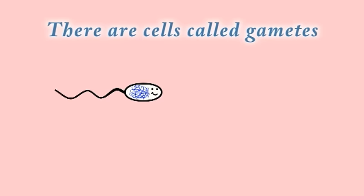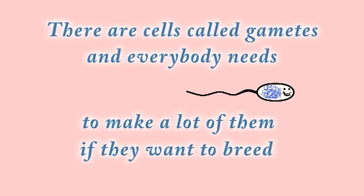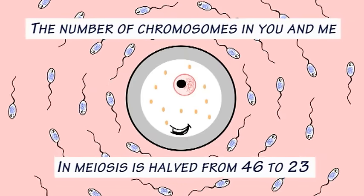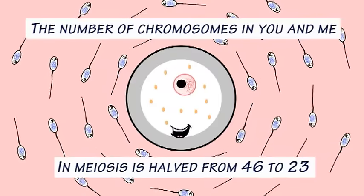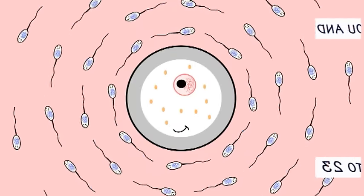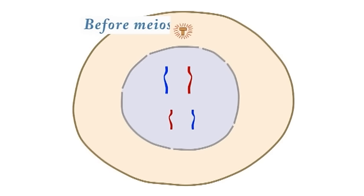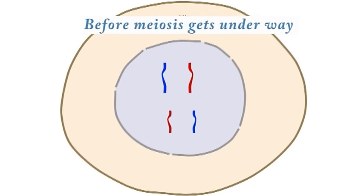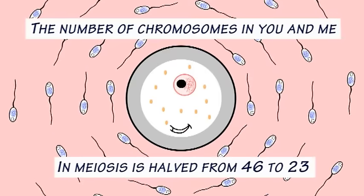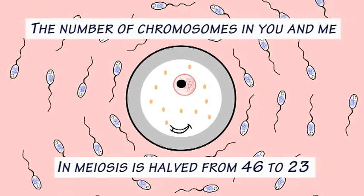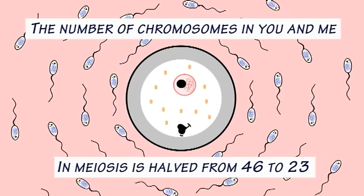There are cells called gametes and everybody needs to make a lot of them if they want to breed. Remember the number of chromosomes in you and me — in meiosis it goes from 46 to 23. Before meiosis gets underway, the original cell must replicate its DNA.